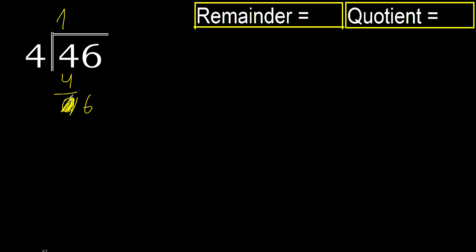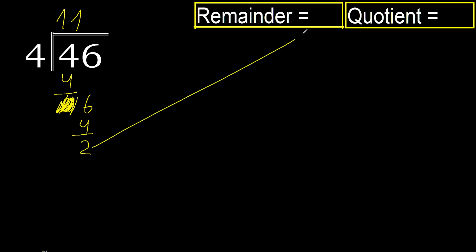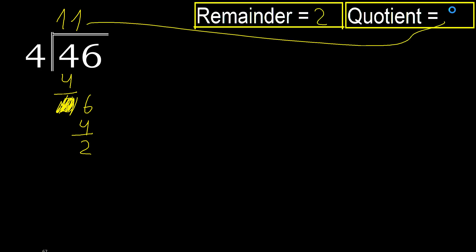Bring down 0 on this side — 6. 4 multiplied by 2 is 8, which is greater. Multiplied by 1 is 4. 6 minus 4 is 2. Next — there is no more number, therefore finish. The answer is 11, remainder 2. Finish.